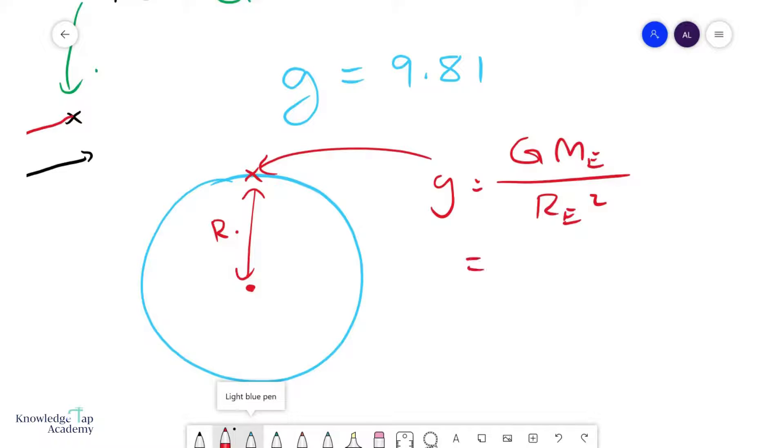And if you try this out, you'll get about 9.81 meters per second squared, maybe a little bit different, and that's because the Earth isn't really a perfect sphere.